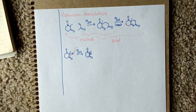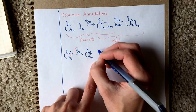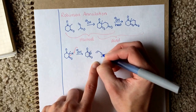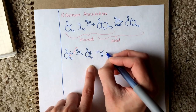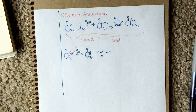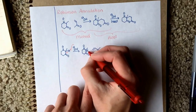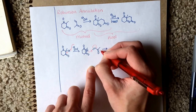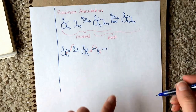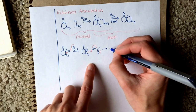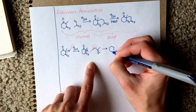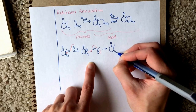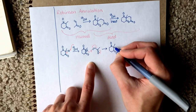Right there, and then the enolate will attack the beta position of our Michael acceptor. We will move electrons throughout that molecule, and we're forming our first carbon-carbon bond.